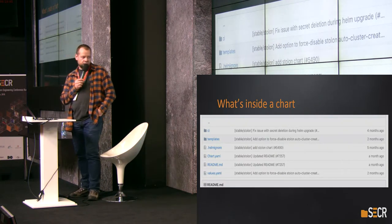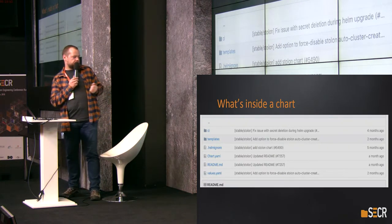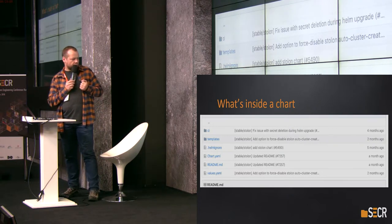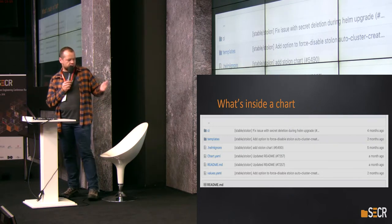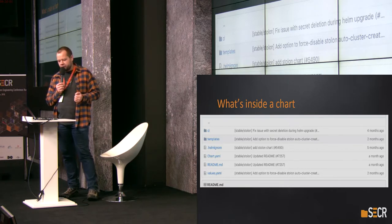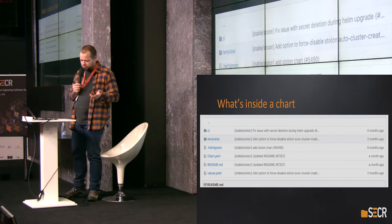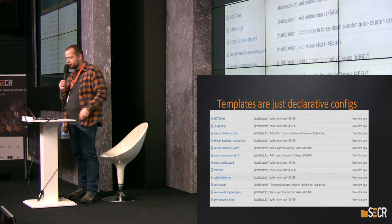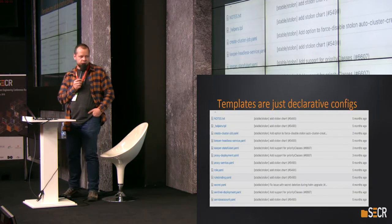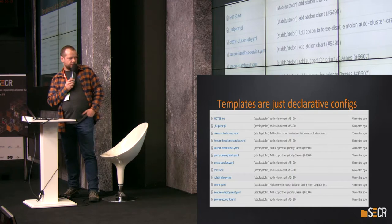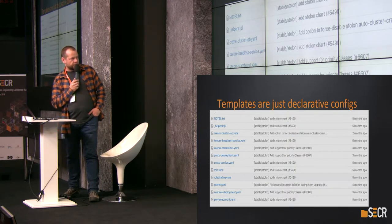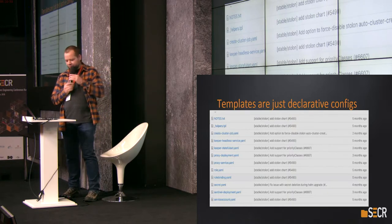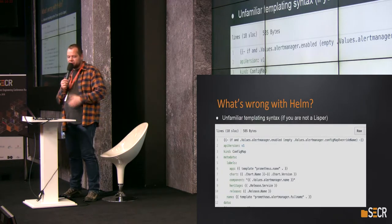What's inside a chart? There is a metadata file called chart.yaml, some documentation, a default set of configuration values, and a folder with templates. Templates are just Kubernetes configuration files — YAML files that are declarative configs.